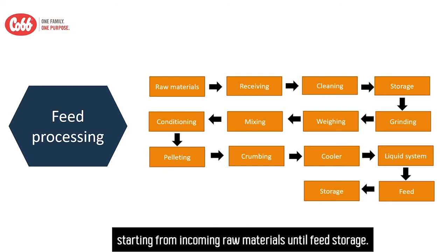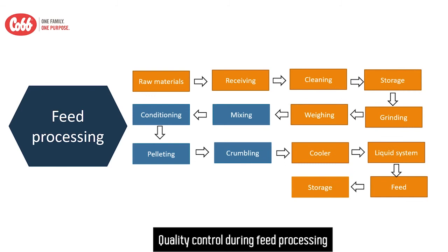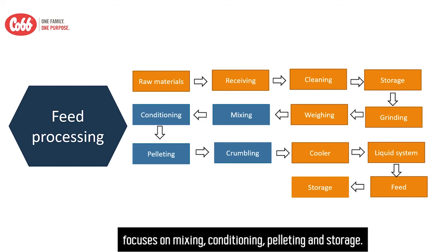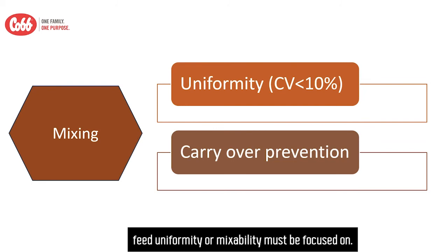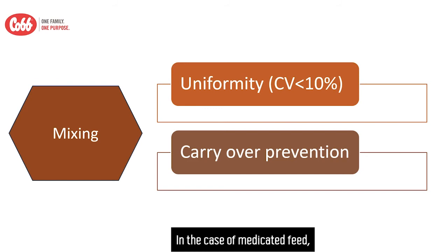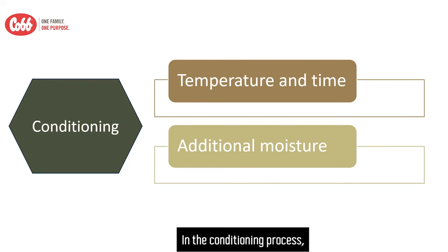The second component is feed processing, starting from incoming raw materials until feed storage. Quality control during feed processing focuses on mixing, conditioning, pelleting, and storage. In the mixing process, feed uniformity or mixability must be focused on. The percentage CV should be less than 10%. In the case of medicated feed, the prevention of carryover must be implemented.